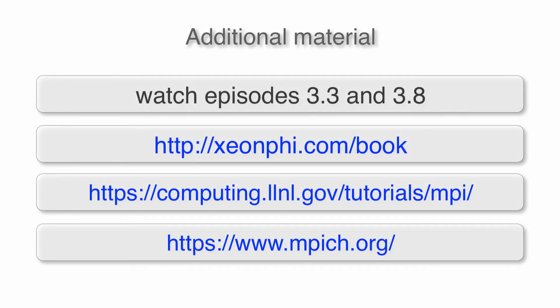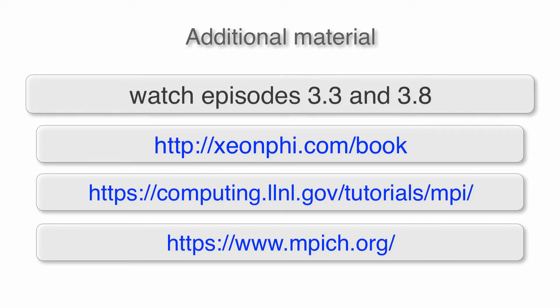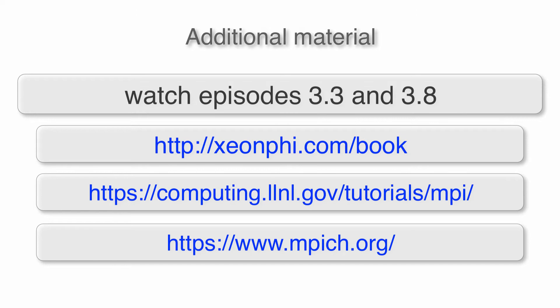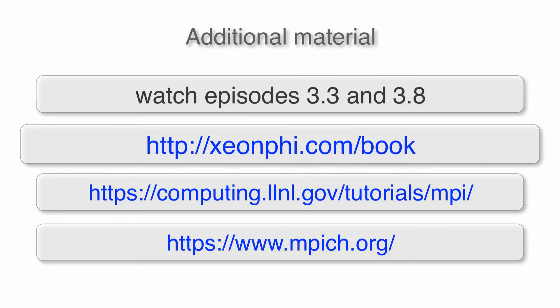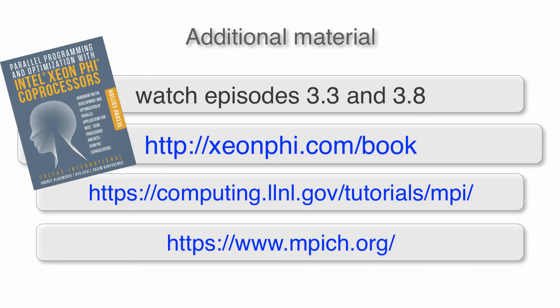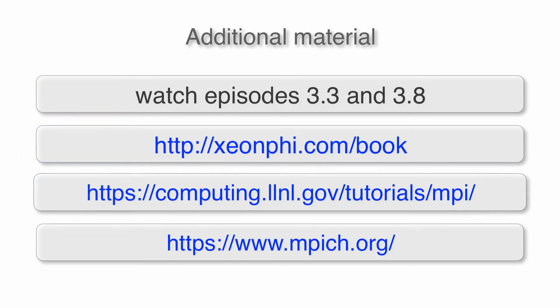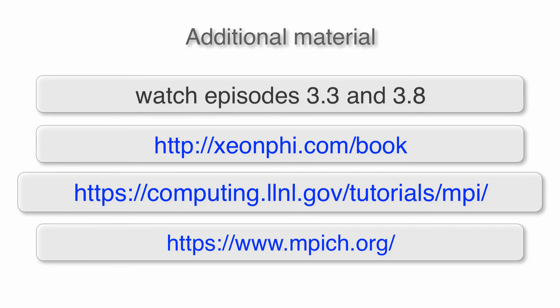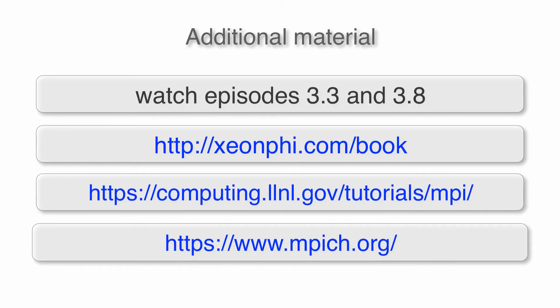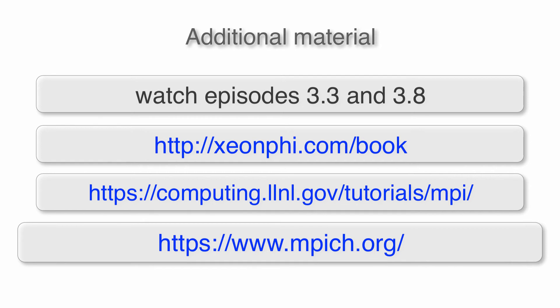Expressing parallelism with MPI is a huge topic because the MPI functionality is very broad and practical applications have a great variety of principles and subtleties. For more information about programming in MPI, refer to episodes 3.3, Native MPI Applications, and 3.8, Heterogeneous Programming with Coprocessors Using MPI, or to our book Parallel Programming and Optimization with Intel Xeon Phi Coprocessors, available at xeonphi.com/book. Good public resources for learning include the Lawrence Livermore National Laboratory Tutorial on MPI or the MPI reference on the MPI Forum website.